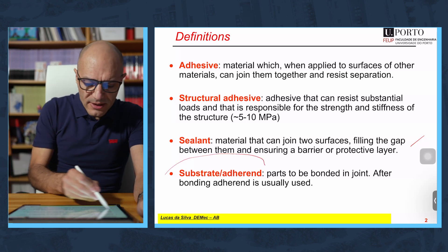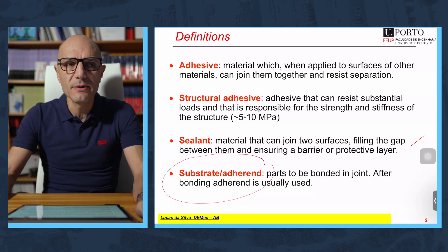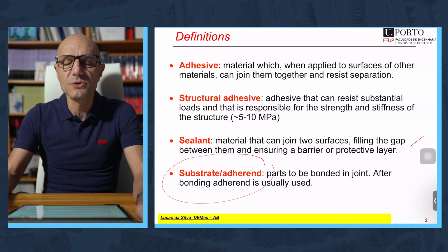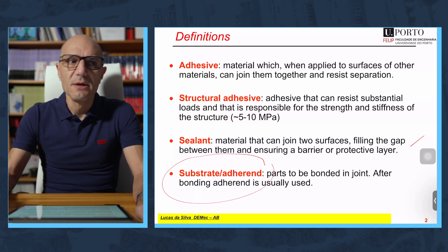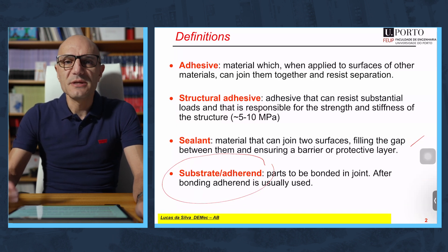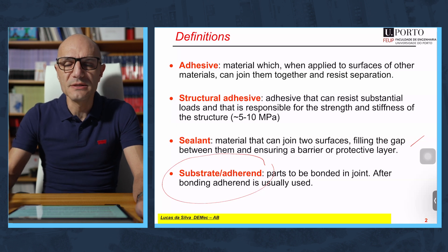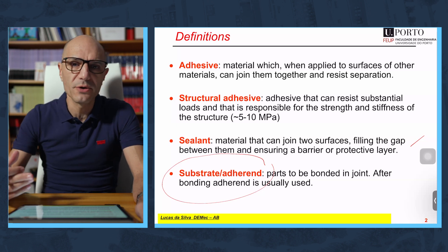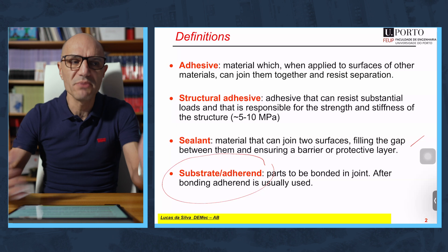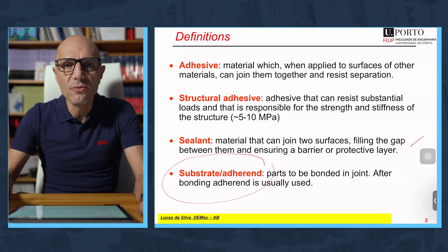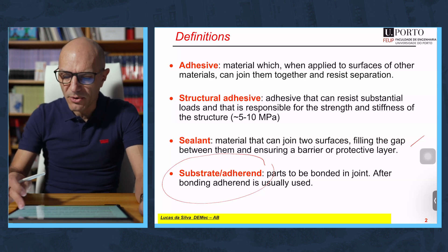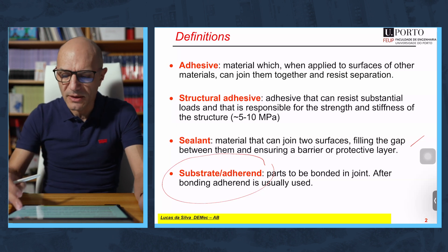The materials that we are going to join, you can call them either substrates or adherents. Sometimes the term "adherents" is used after the joint is made, and "substrate" is used before the joint is made. But you can use the two interchangeably without any problem — people will understand.